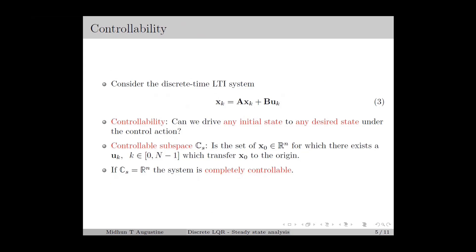We consider the discrete time LTI system as given in equation number 3. Controllability can be considered as the ability to transfer the system from any initial state to any desired state in a finite time using a finite control action. Without losing any generality, the desired state can be considered as the origin since we can transfer any non-zero reference to zero using a suitable coordinate transformation. Therefore, the system is said to be controllable if any initial state x0 can be transferred to the origin in a finite number of time instances using a finite control input.